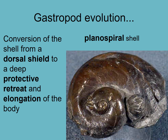Most all gastropods have shells. This is a very old gastropod which has what's called a planospiral shell. It's all in one flat plane and it spirals around on itself in a flat plane. And this is essentially a limpet that has been elongated, so that gives a place for the body of the animal to retreat and be protected from predators.